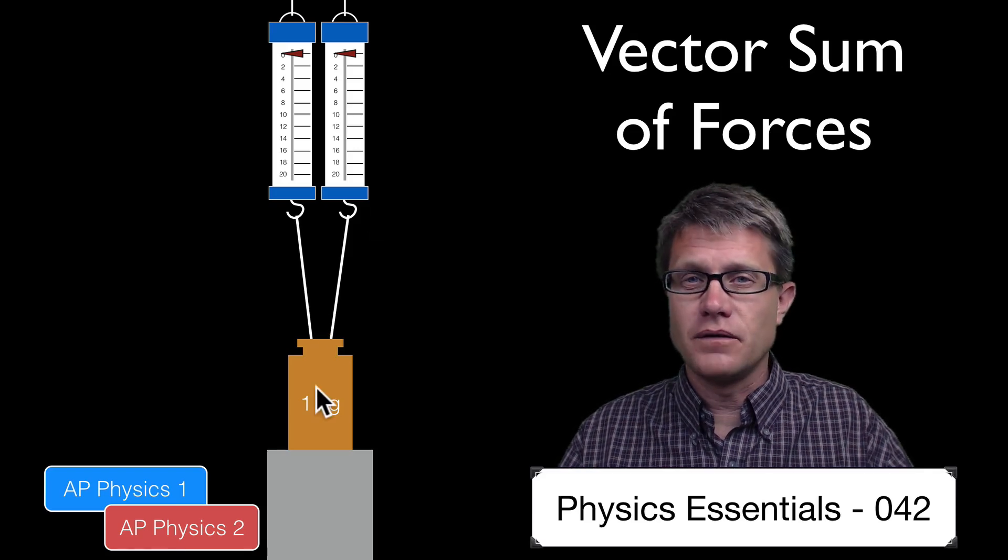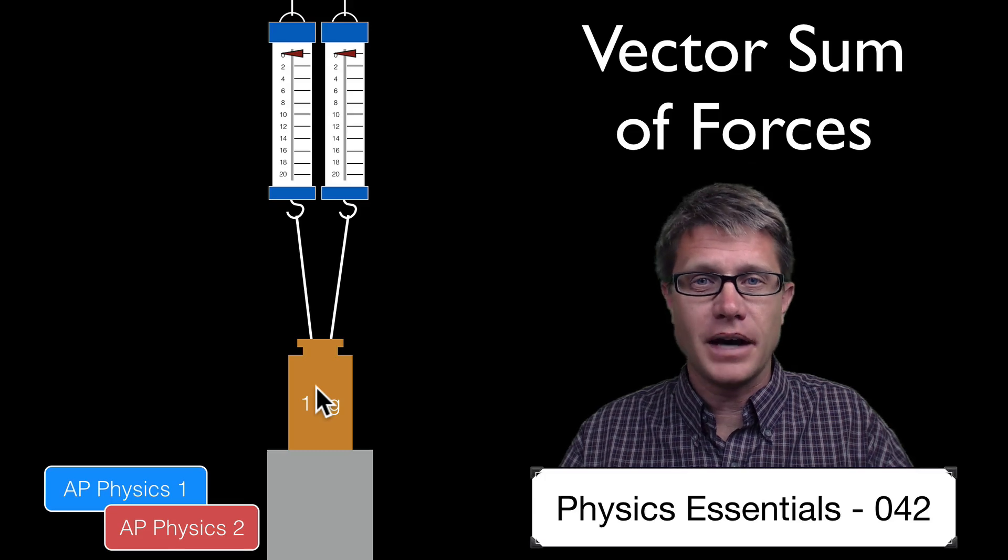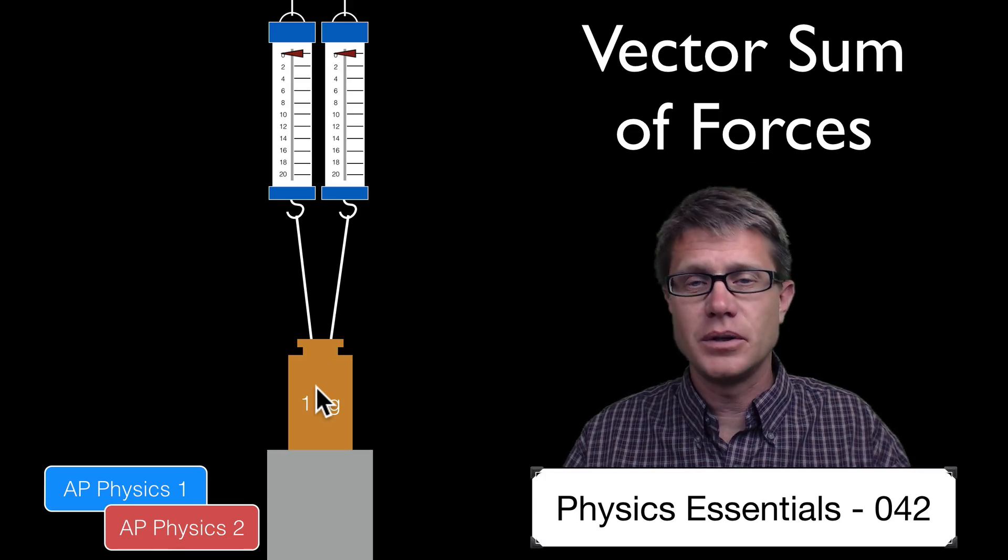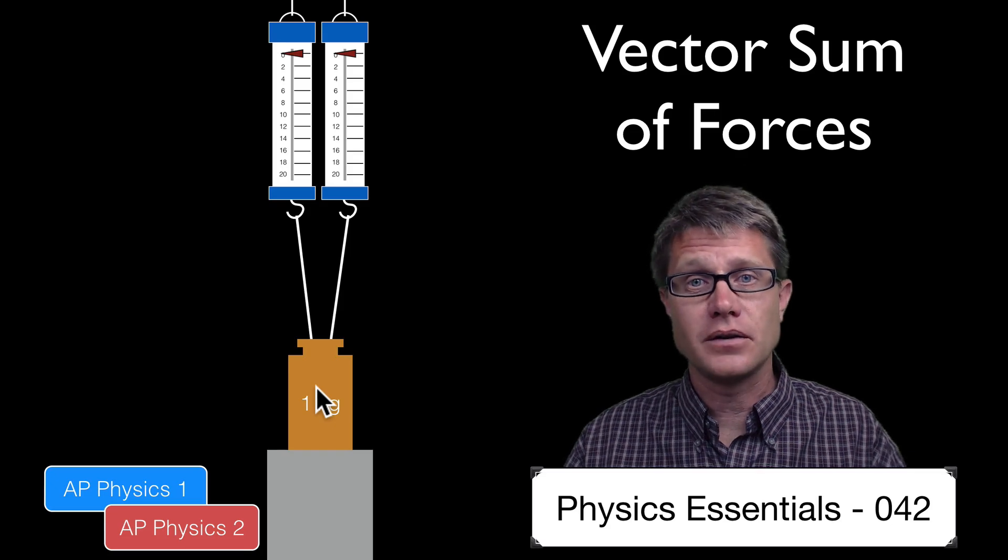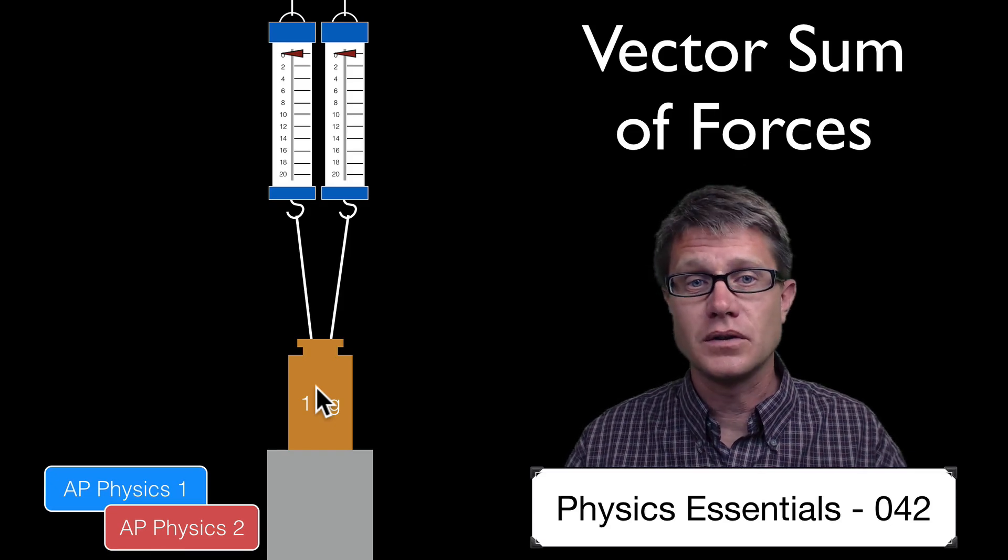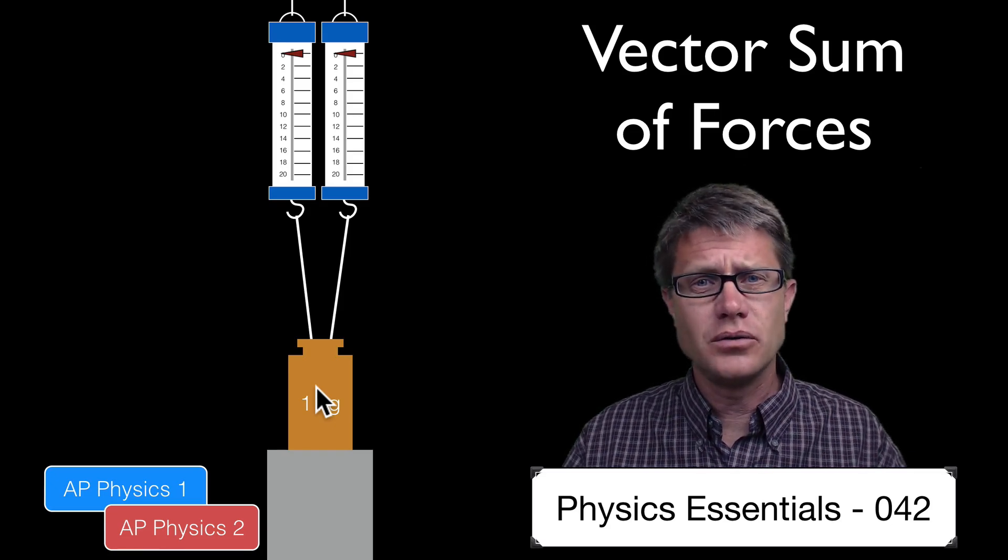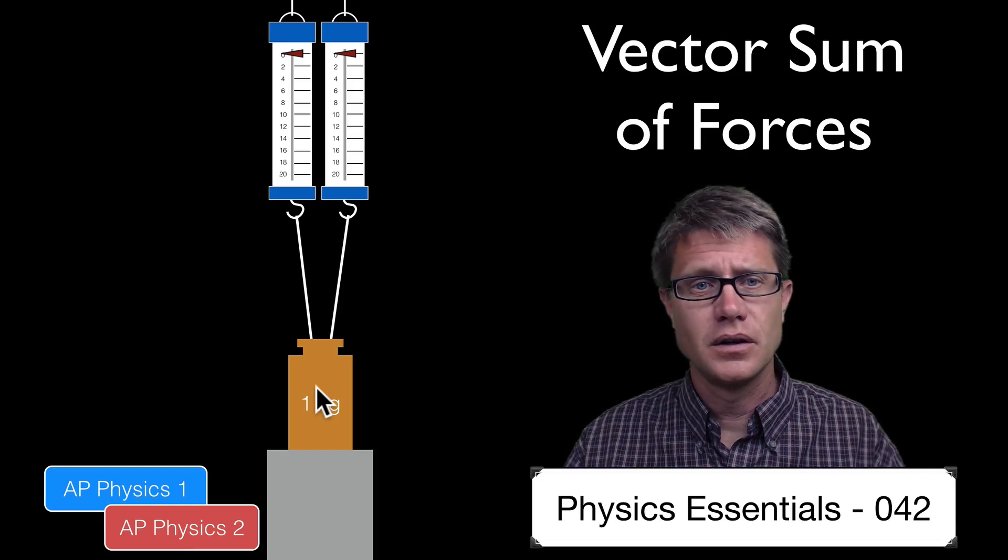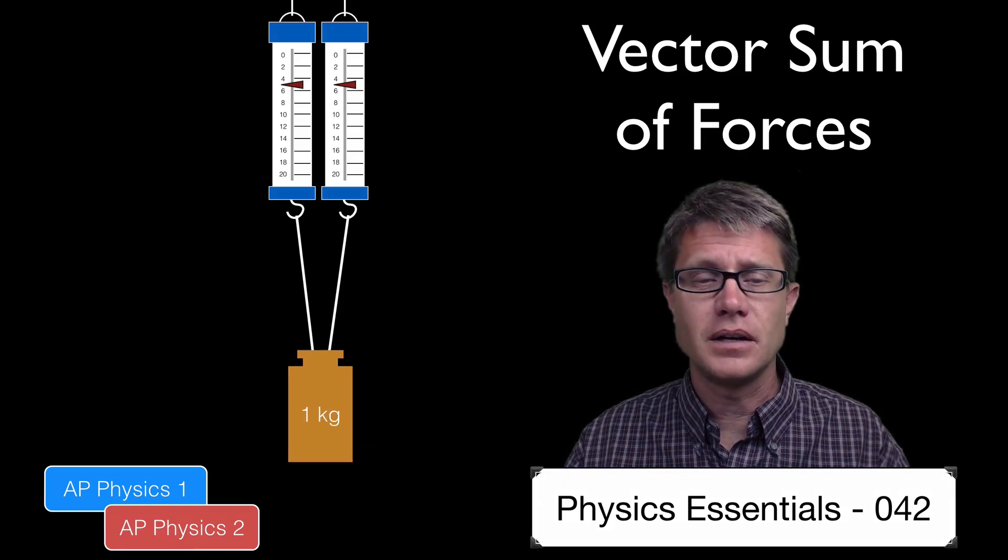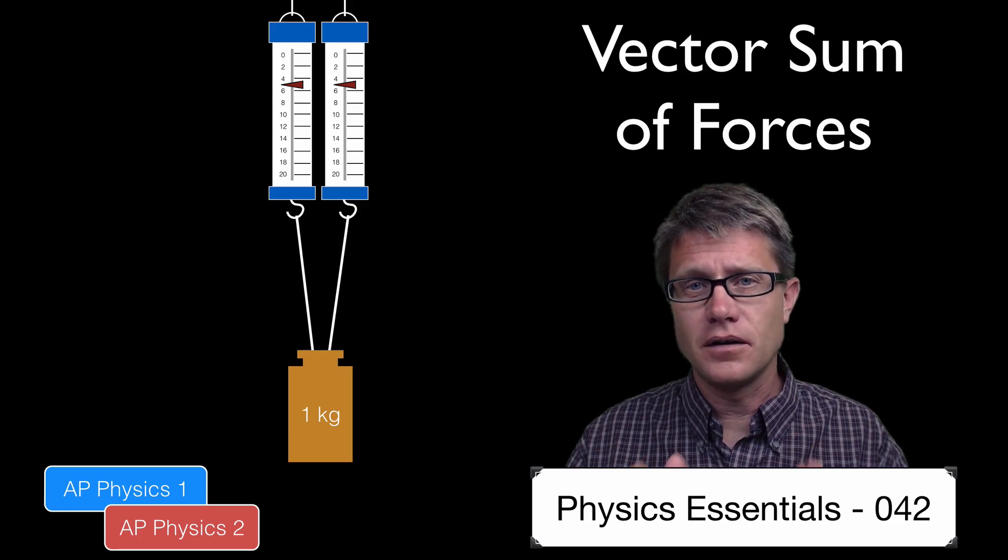So what is the force in the vertical? Well the 1 kilogram mass, to figure out the force of gravity, we simply take the mass times the gravitational field strength. So it is going to be 9.8 newtons. What do you think each of those two scales are going to read if they are both splitting that force? Well it should be around 5 newtons. And it is, as long as they are acting in the vertical.